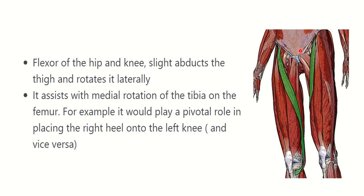Let's look at the sartorius muscle — the green one here. We can see it originates from the anterior superior iliac spine and inserts into the medial aspect of the tibia. It forms the pes anserinus with two other muscles. It is the most superficial muscle of the thigh, supplied by the superficial branch of the femoral nerve.